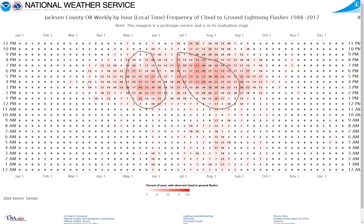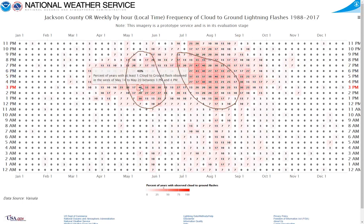If you put your mouse or finger on the grid box that represents the week of May 14th to May 20th, between 3 p.m. and 4 p.m. local time, you can see that at least one cloud-to-ground lightning flash occurred in 40% of the years between 1988 and 2017, between the hour of 3 p.m. to 4 p.m. during the week of May 14th to May 20th.